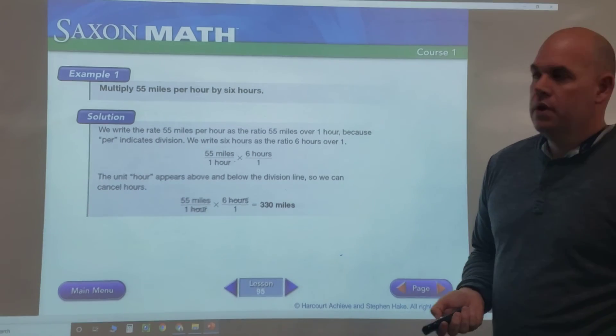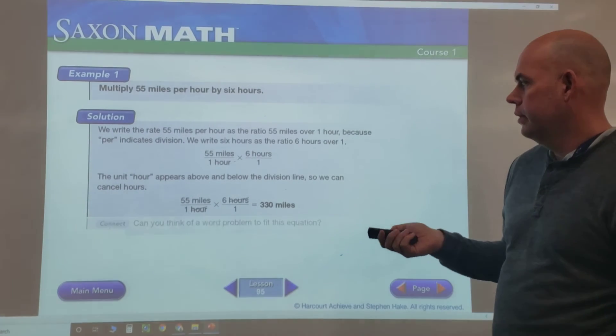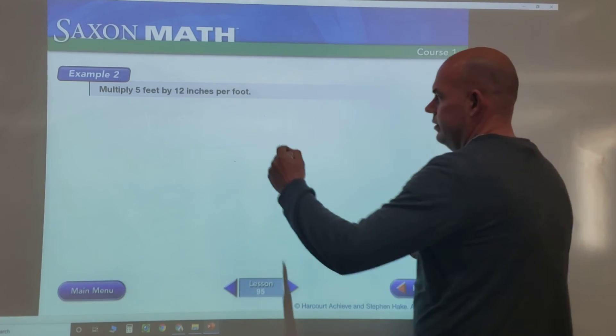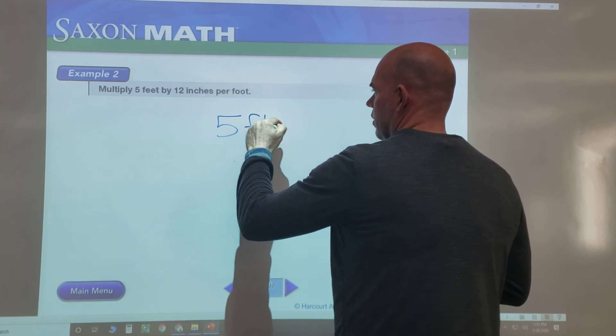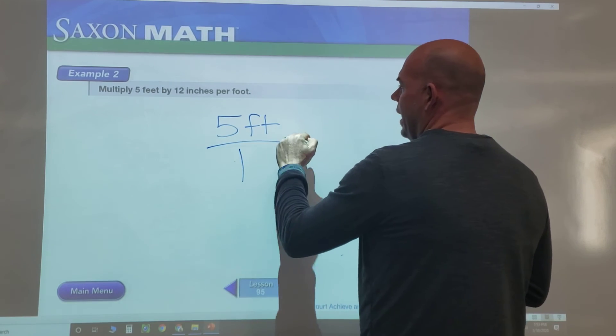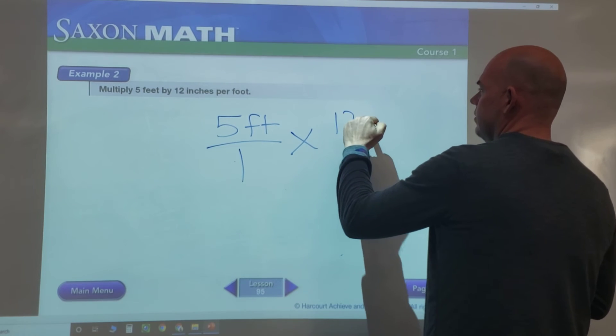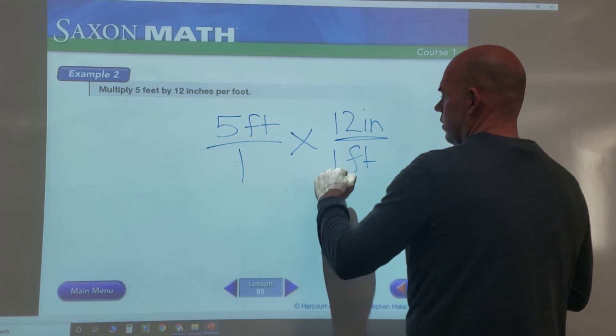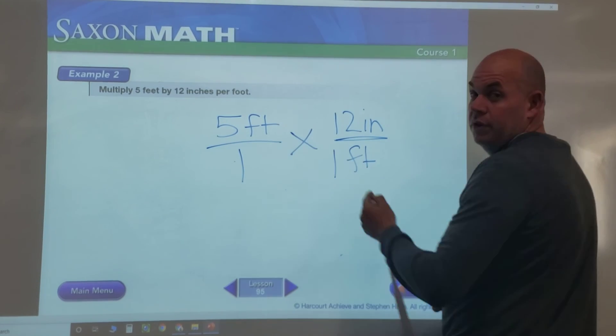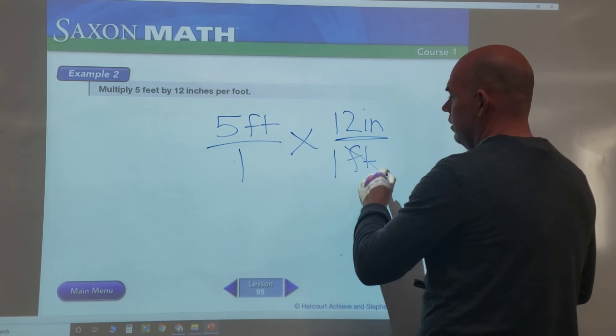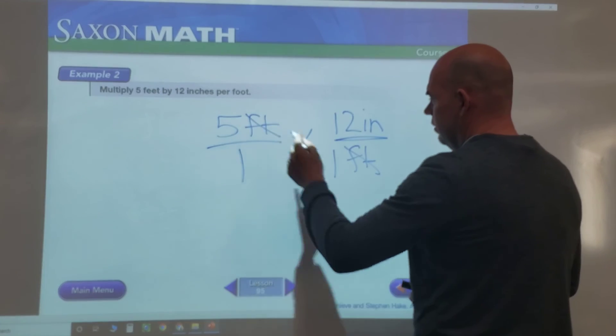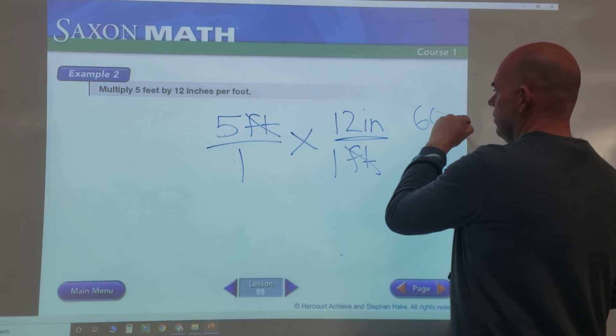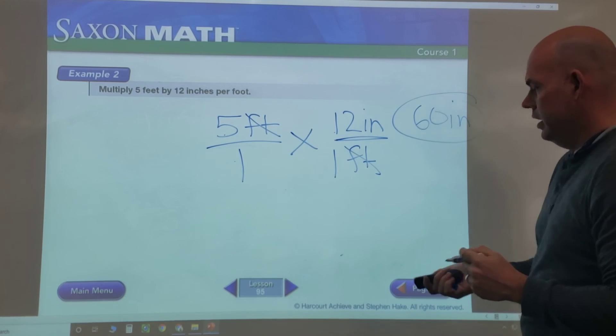All right, now let's try another one. Multiply 5 feet by 12 inches per foot. Now we can see, using our canceling, we can cancel out feet. Nothing else cancels out, so we'll just do 5 × 12 = 60 inches over 1, so it's just 60 inches.